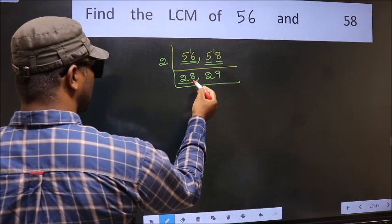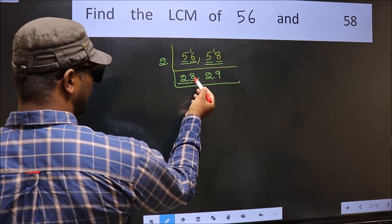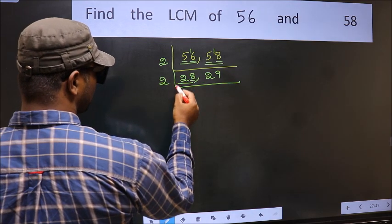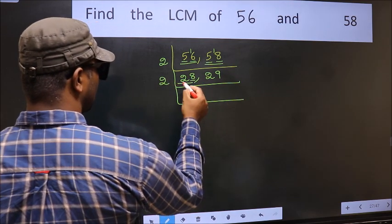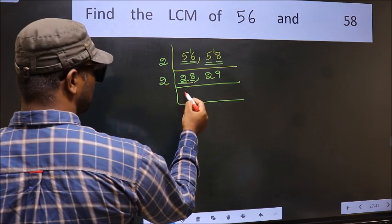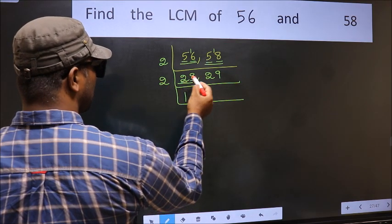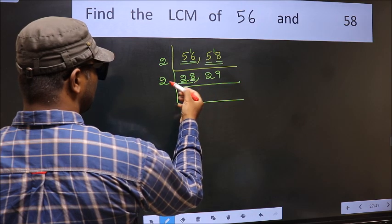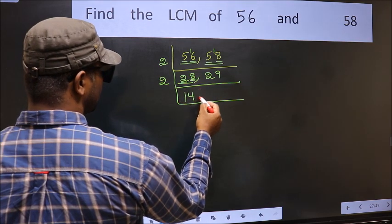Now here we have 28. Last digit is 8, so take 2. The first digit is 2. When do we get 2 in the 2 table? 2 1's are 2. The other number is 8. When do we get 8 in the 2 table? 2 4's are 8.